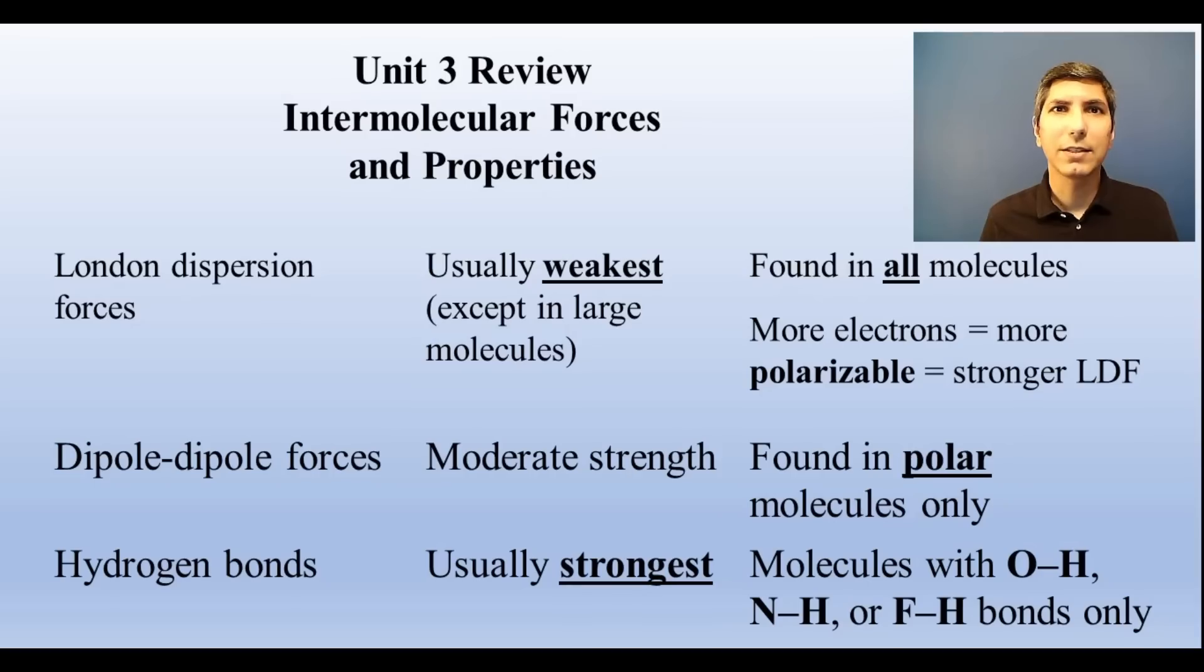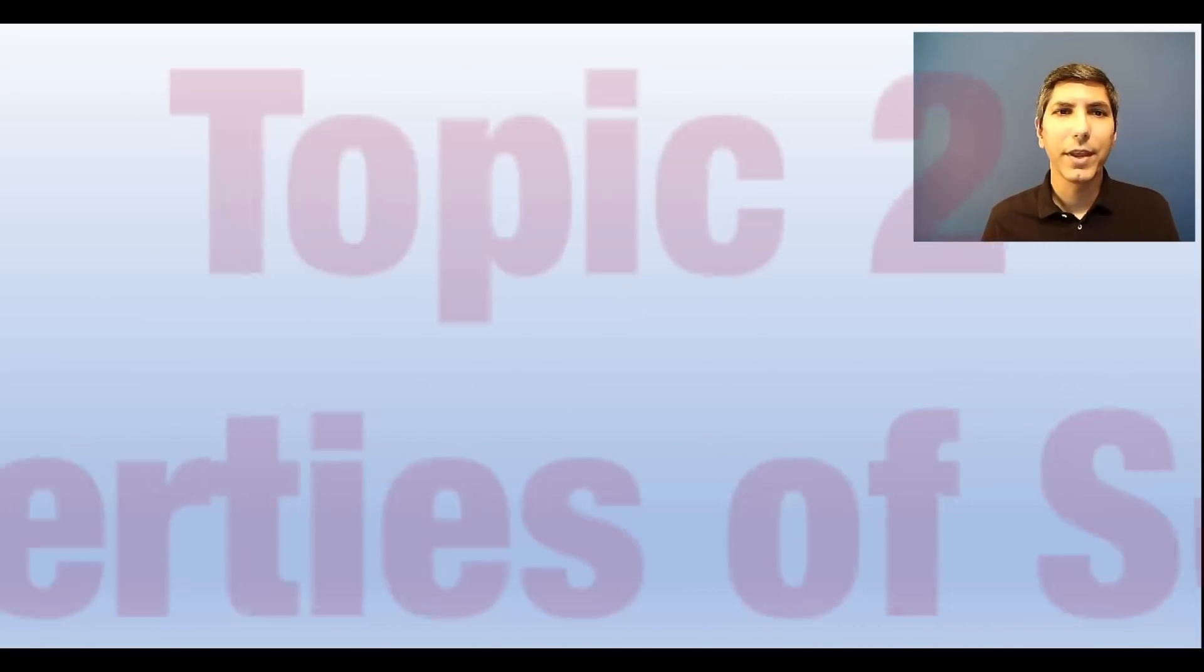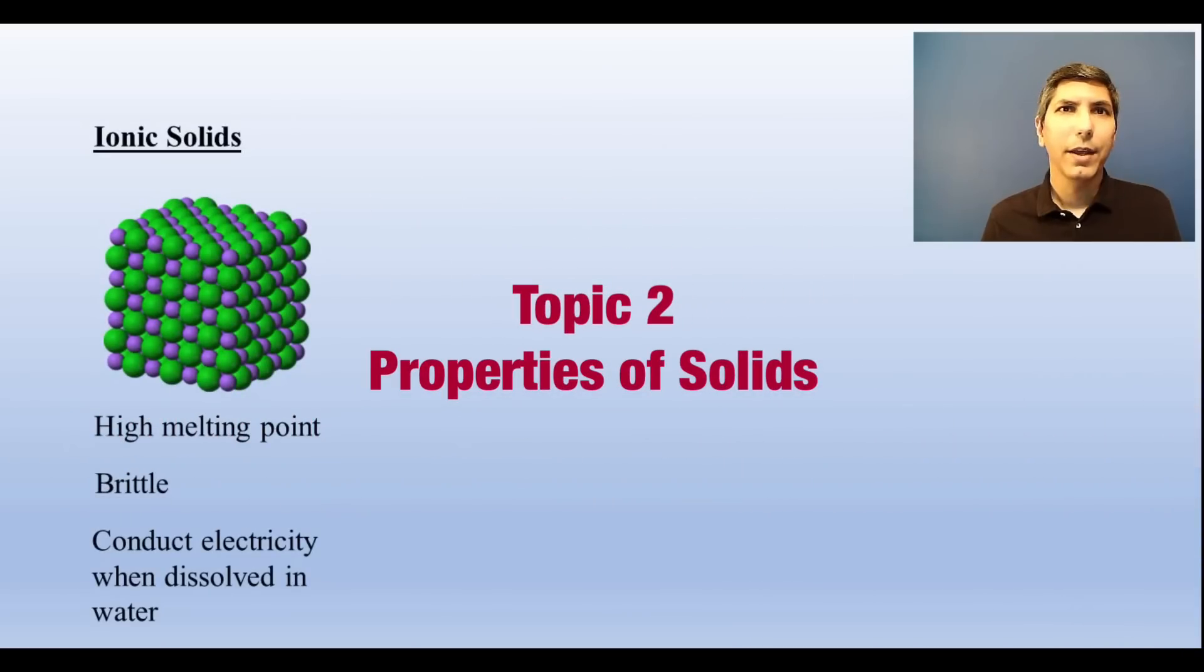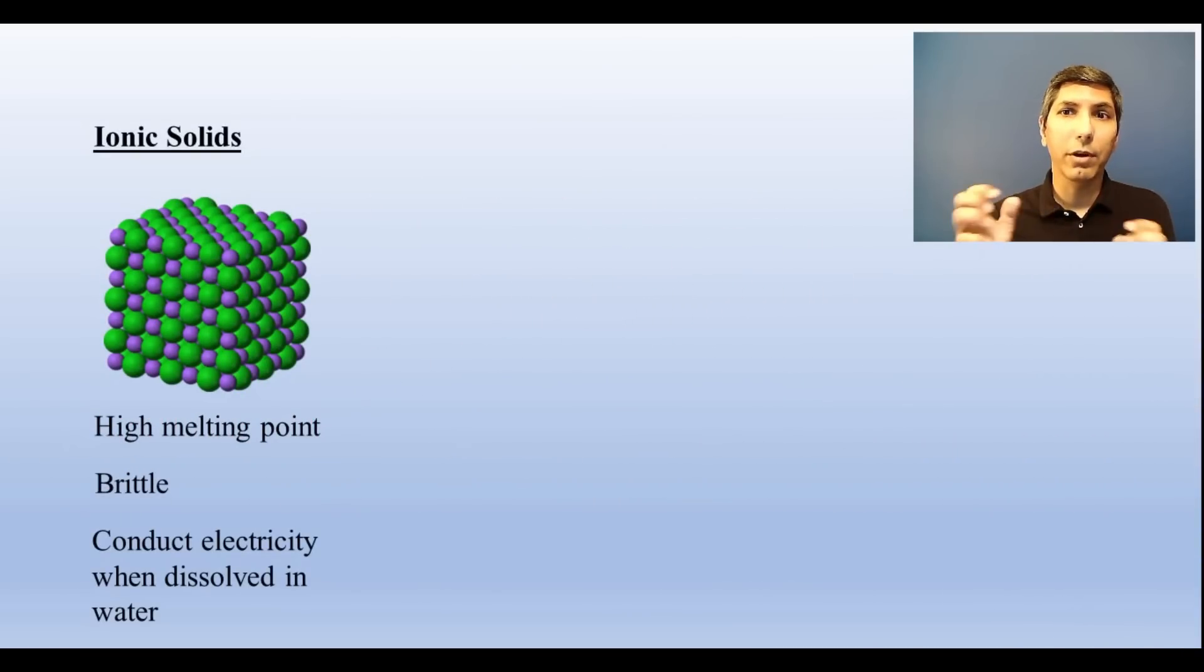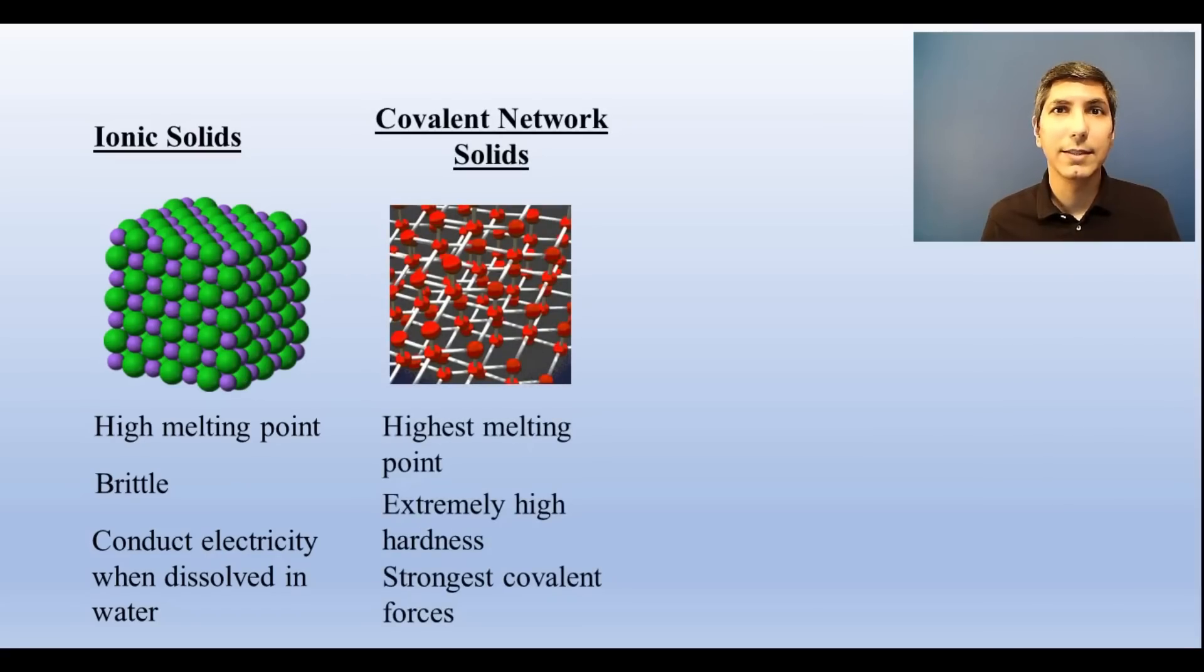Different types of solids have different properties. Ionic solids have high melting points due to the strong attractions between oppositely charged ions. They are also brittle and conduct electricity when dissolved in water. Covalent network solids, such as diamond and silicon dioxide and graphite, have some of the strongest covalent forces out there. Each atom is bonded to multiple other atoms in multiple directions, making these extremely strong.